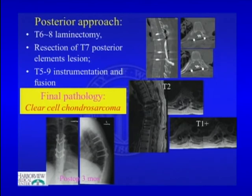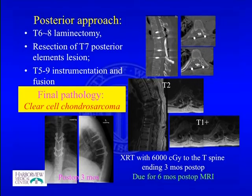We did a posterior laminectomy, taking the patient relatively urgently to the OR, decompressing and resecting the tumor from the back going through the pedicle to reach healthy bony tissue. The final pathology was a clear cell chondrosarcoma. We instrumented two above and two below, and the patient received radiation with 6000 cGy to the T-spine, ending six months after surgery. Right now the patient is due for a six-month MRI scan, and at this time we don't have the follow-up MRI yet, though clinically the patient is doing well.